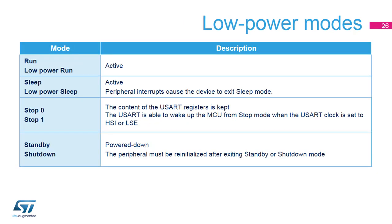The USART peripheral is active in Run, Sleep, and Low Power modes. USART interrupts cause the device to exit Sleep and Low Power sleep modes. The USART is able to wake up the MCU from Stop 0 and Stop 1 modes when the USART clock is set to HSI or LSE. In Standby and Shutdown modes, the peripheral is in power down and must be re-initialised after exiting Standby or Shutdown mode.